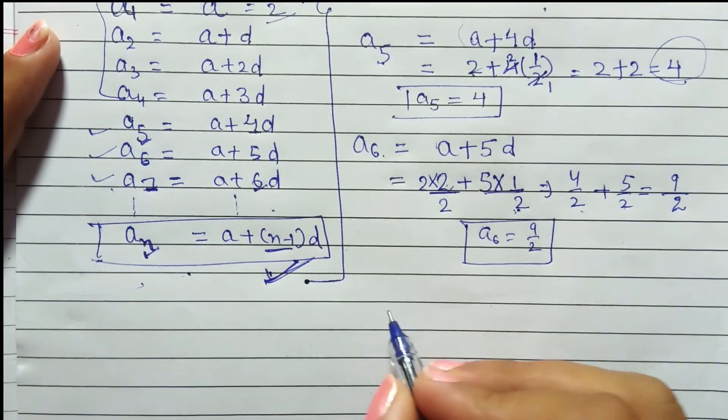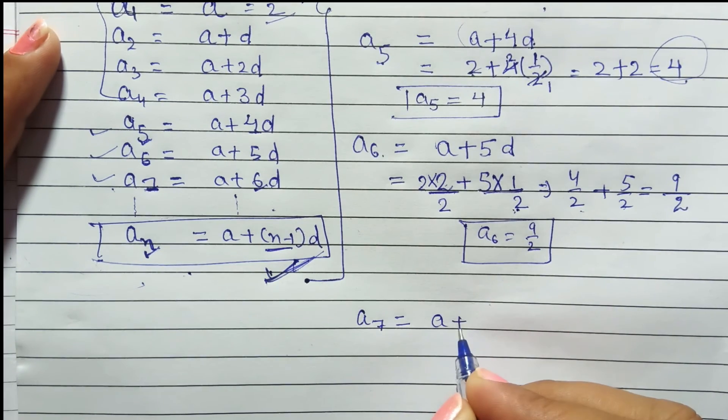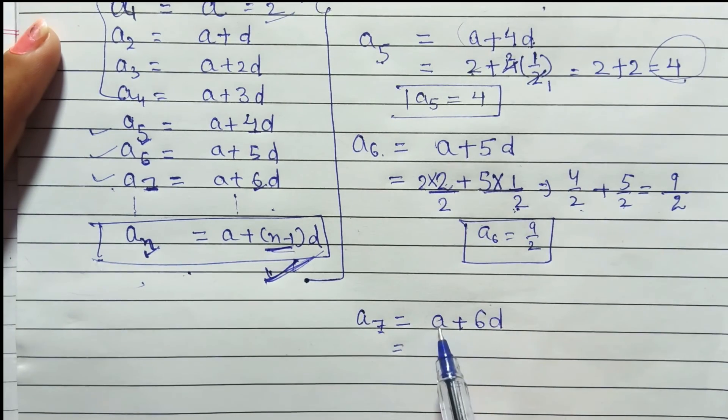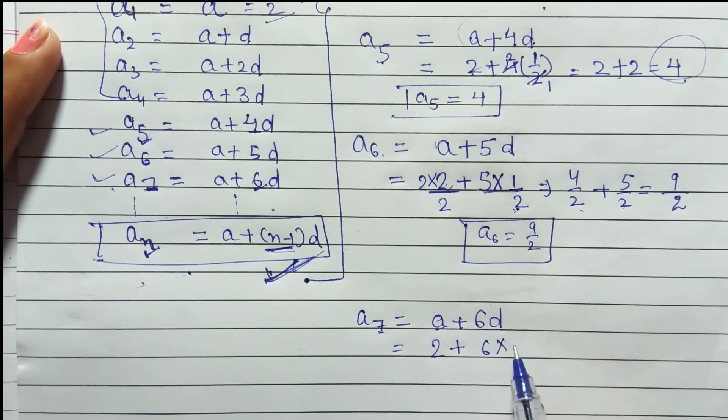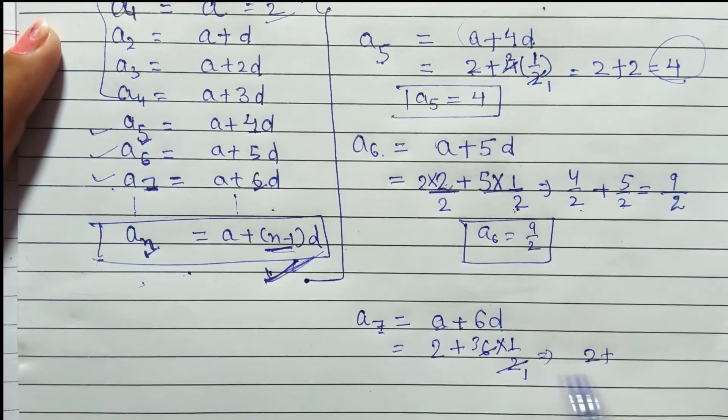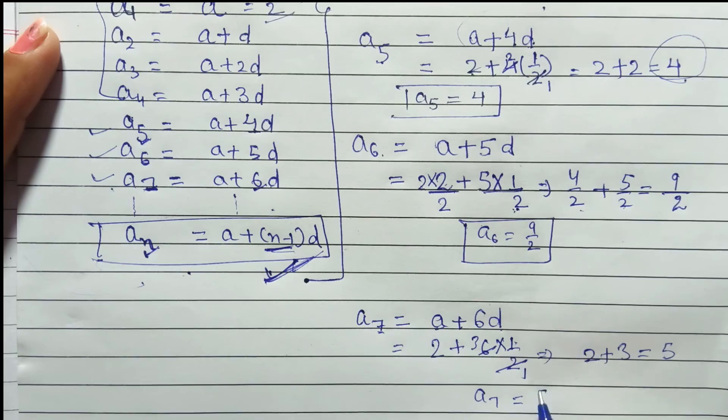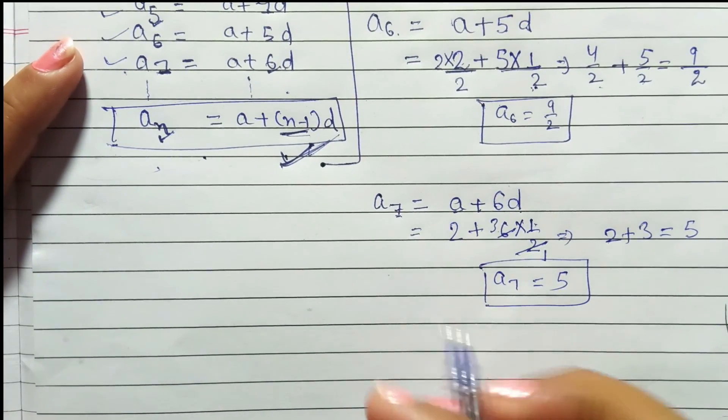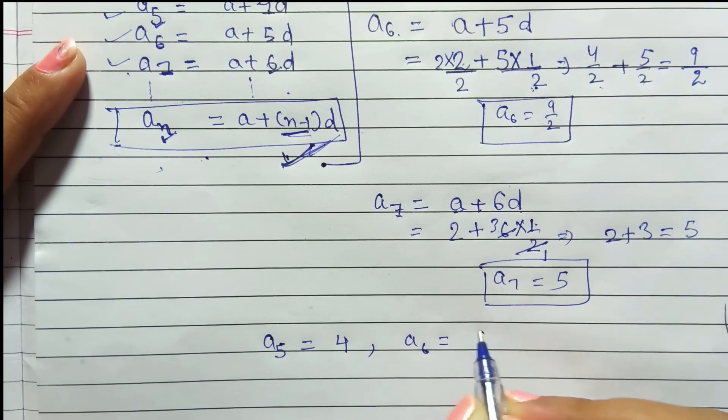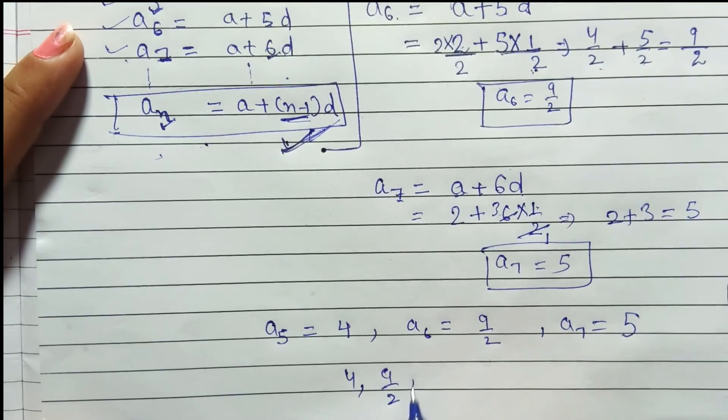Now, last or third term we have to find. A7. Again observe this formula. What will come here? A plus n minus 1. That is 7 minus 1. How much will it be? 6, D. Again put the values. A value is 2. Plus 6 into D value which is 1 by 2. Now here cancel is happening. 2 1's are 2. 2 3's are 6. So what remains? 2 plus 3. Equals to 5. So A7 value is coming 5. So see the 3 more terms we had to find out. Which were A5 that is 4, A6 that is 9 by 2, A7 that is 5. So these are our 3 more terms.